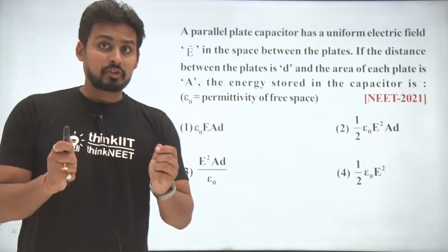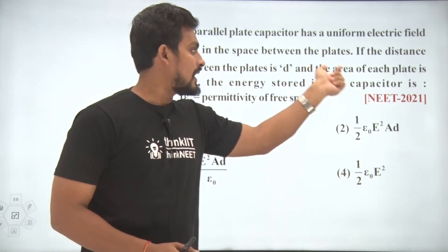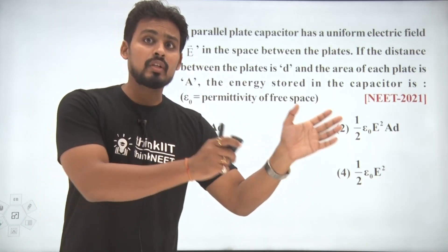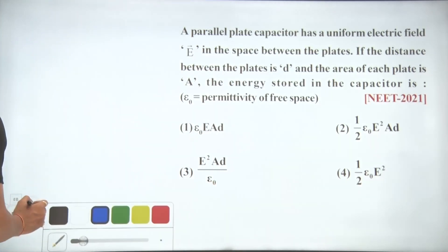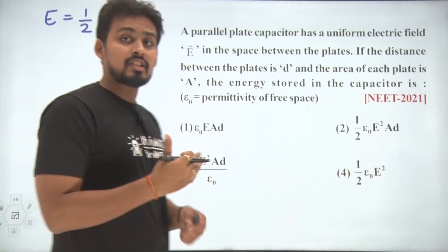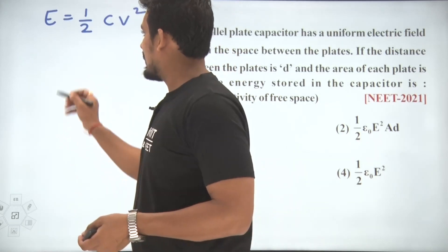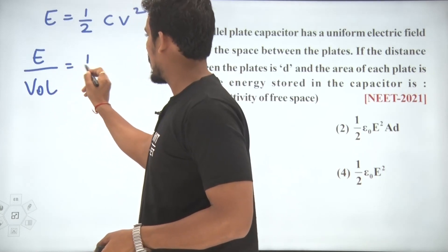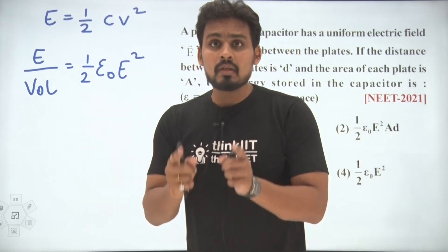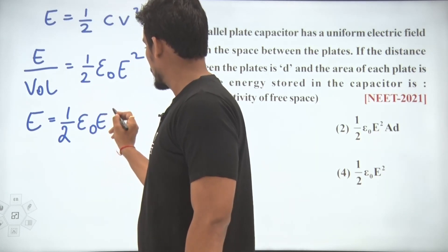Thank you. A parallel plate capacitor has a uniform electric field E in the space between the plates. If the distance between the plates is d and the area of each plate is A, the energy stored is what? The energy stored in a capacitor is ½CV². The energy per unit volume is ½ε₀E², and the volume is the space between the plates.